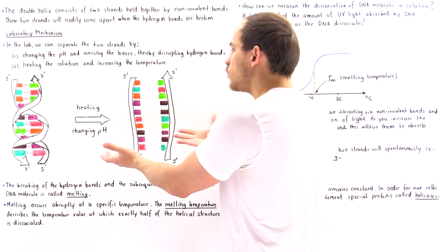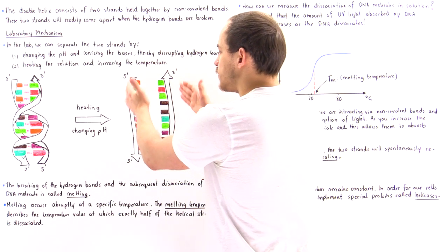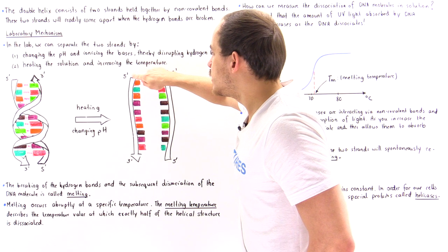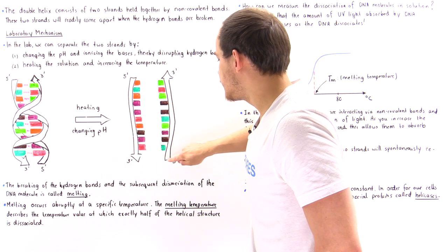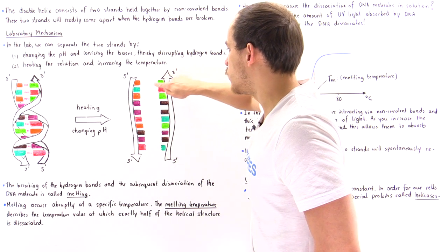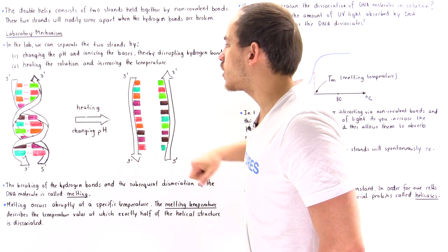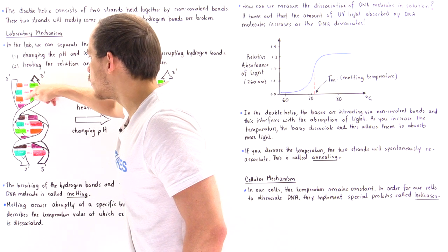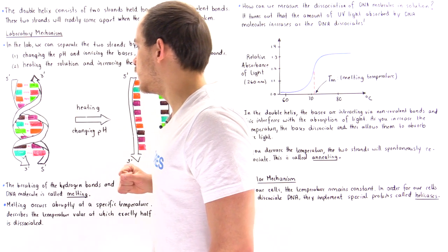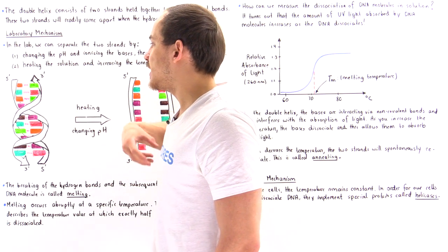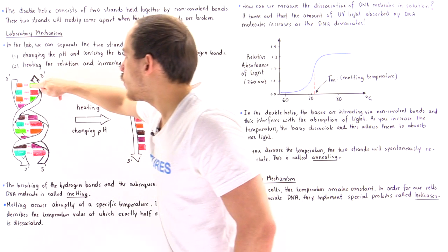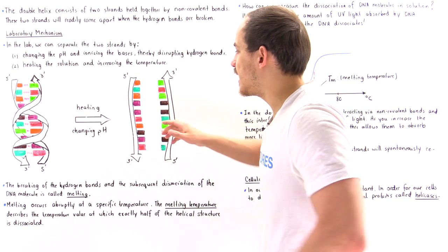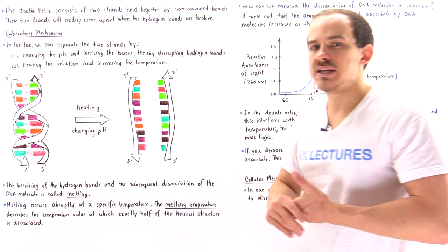We dissociate our DNA helix and form two individual strands of DNA. The backbone consists of phosphate and sugar groups, and the colored structures are our bases. In the double helix structure, hydrogen bonds hold the two strands together. When we either increase the temperature or change the pH, we disrupt and break these hydrogen bonds, dissociating our DNA molecule.